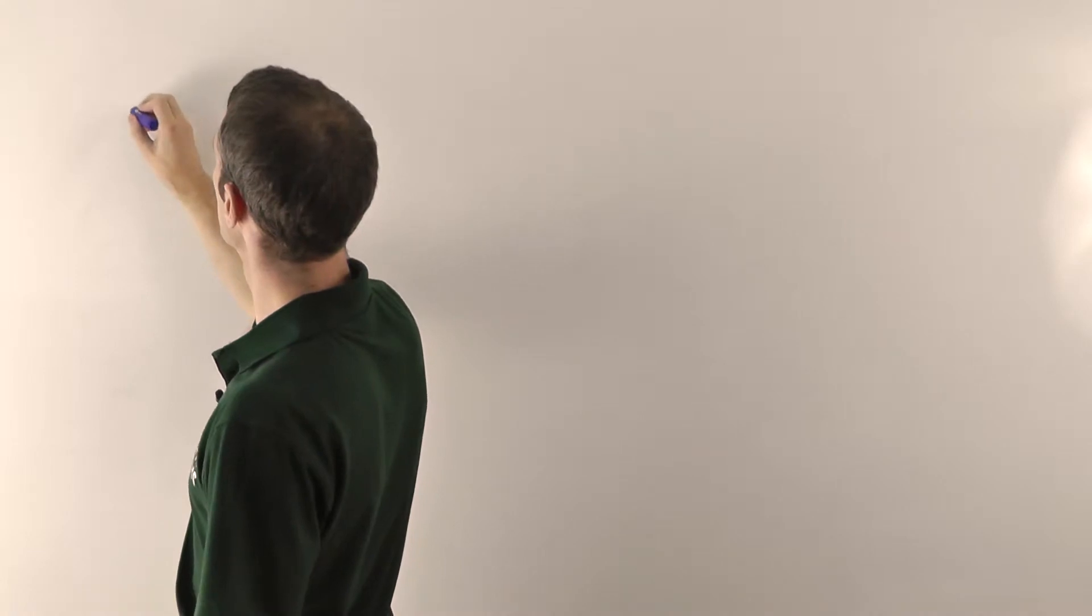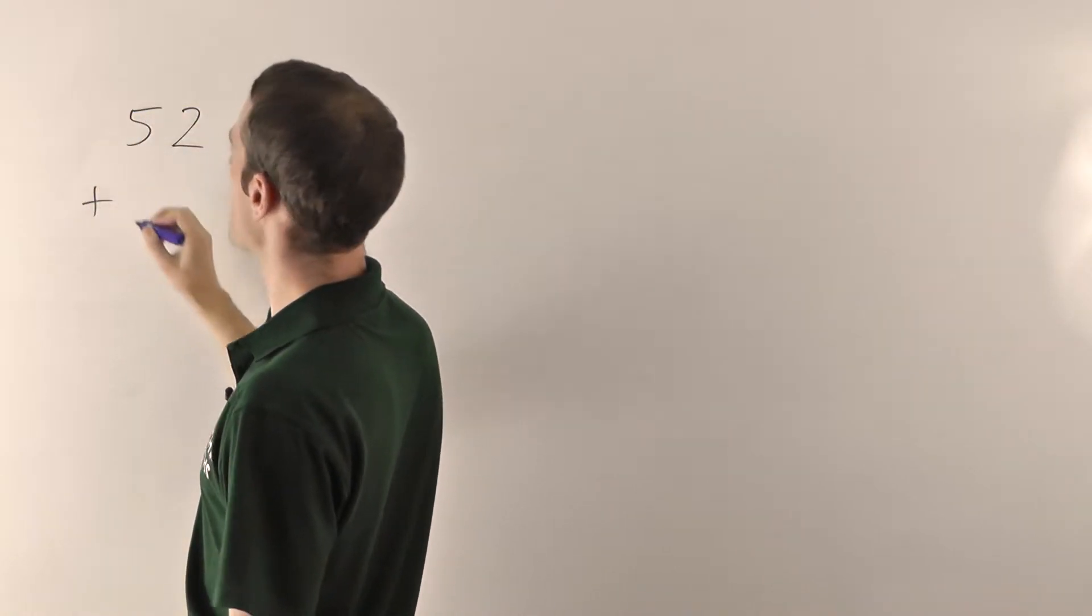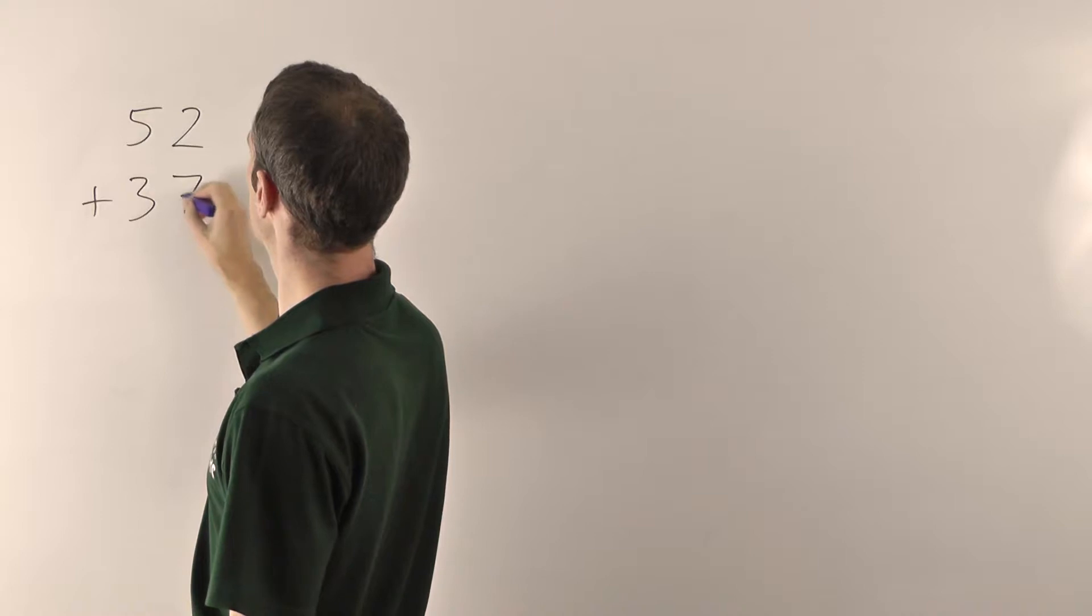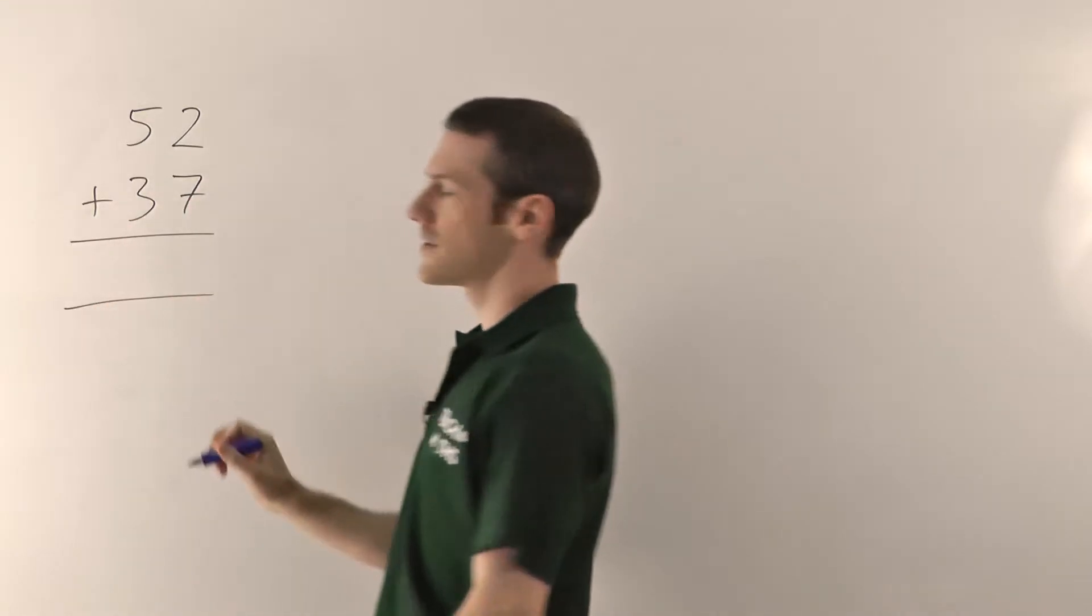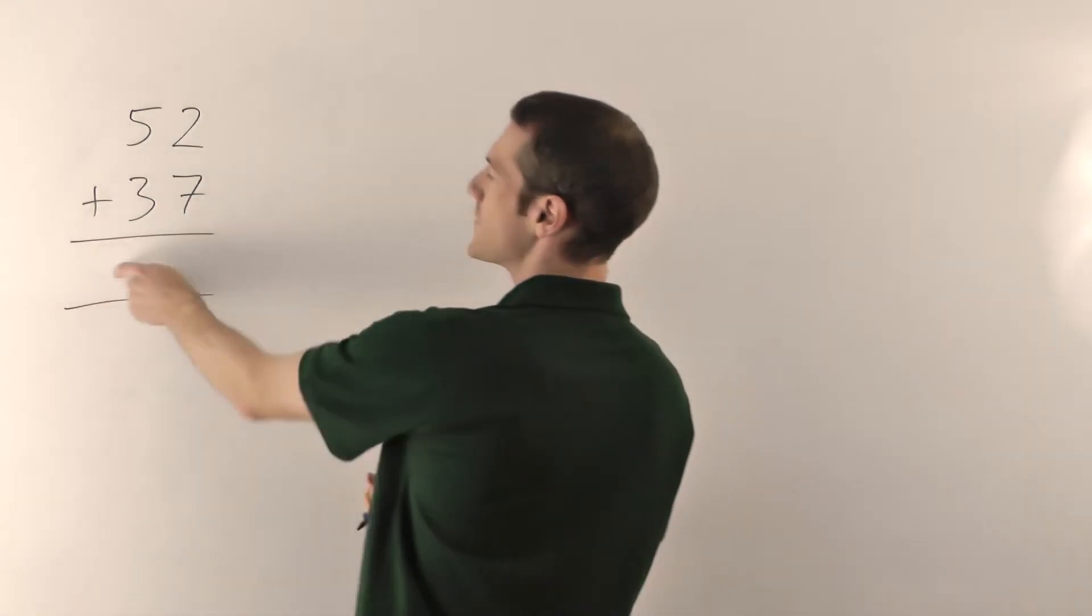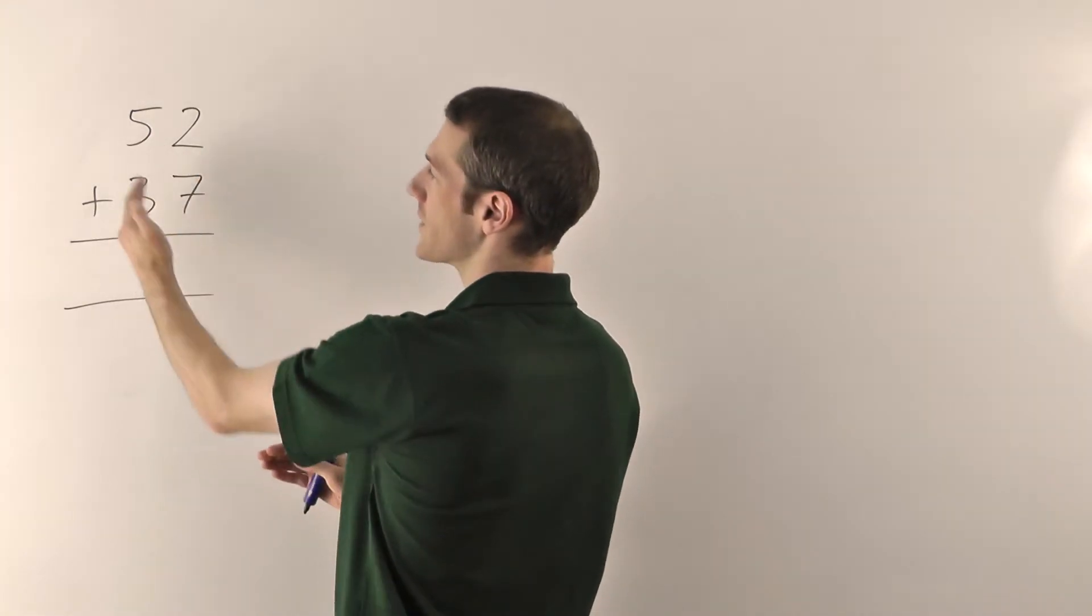We'll try 52 plus 37. That will do. So this is the way you lay it out. This is your space for your answer and the main thing is you've got to line up the columns.